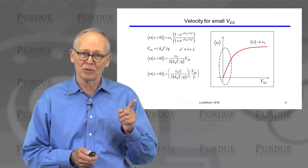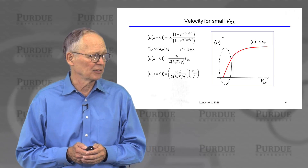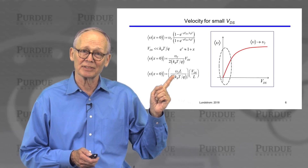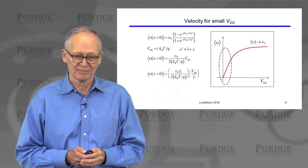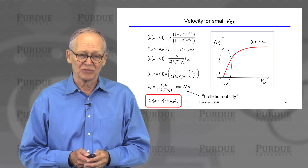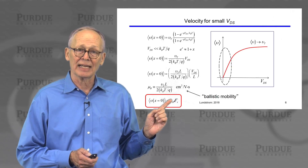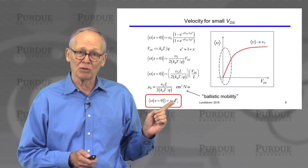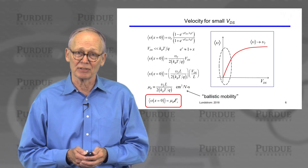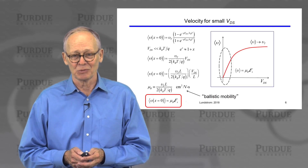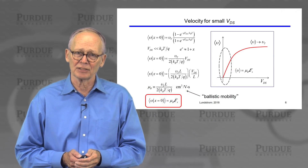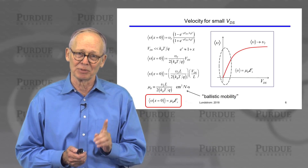I can recognize drain voltage divided by length as the electric field in the channel. And I should be able to recognize this quantity too — you should be able to see that this is our friend, the ballistic mobility. So what we determine is that out front we have the ballistic mobility, and we simply conclude that the average velocity at the top of the barrier in the small drain-source voltage limit is just ballistic mobility times the electric field — a very reasonable result. Velocity is proportional to the electric field in the linear regime, but we have to use the ballistic mobility in the ballistic limit.